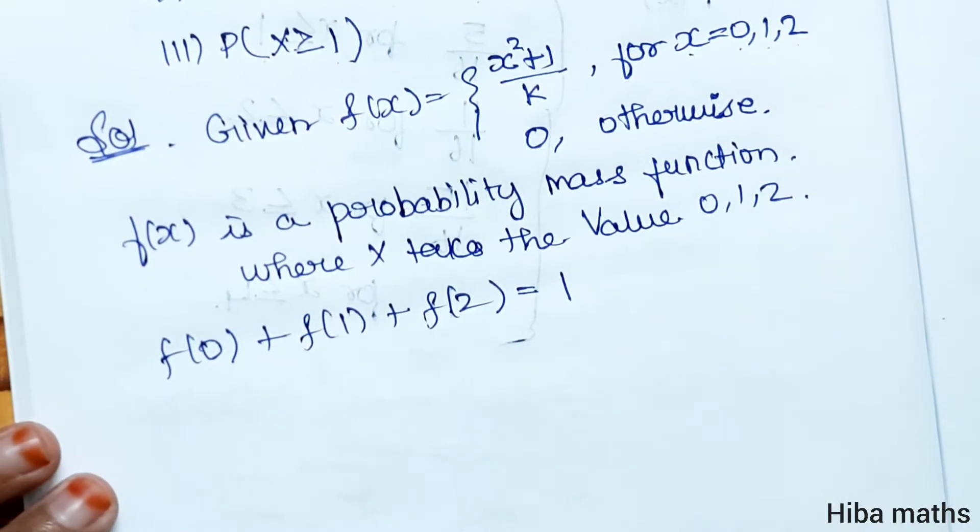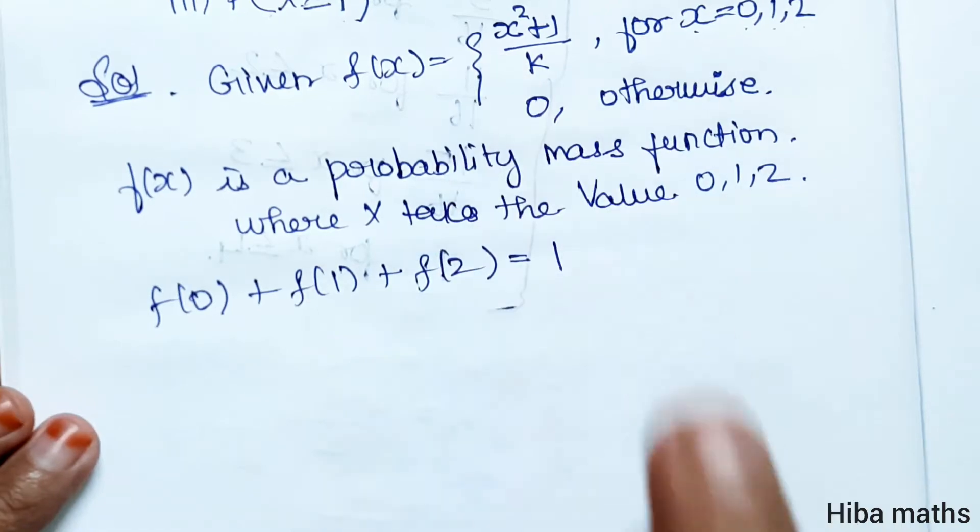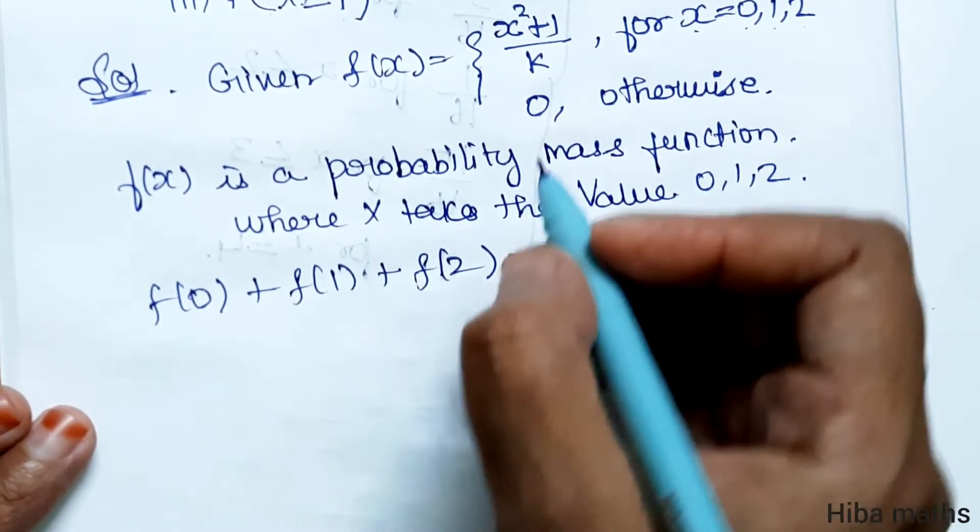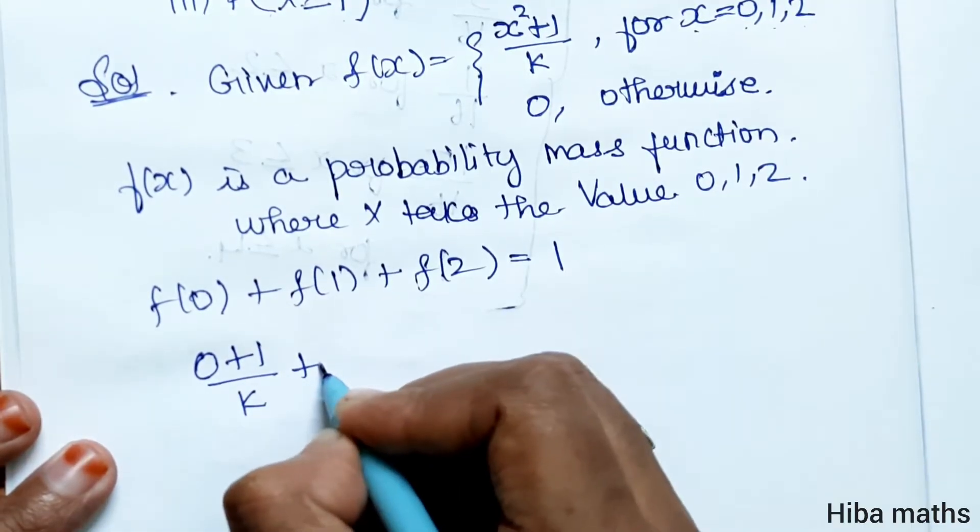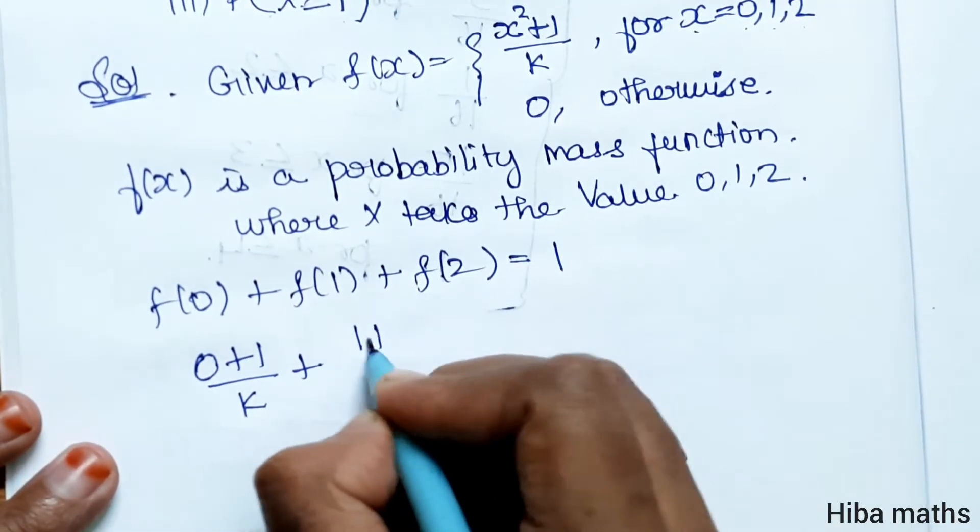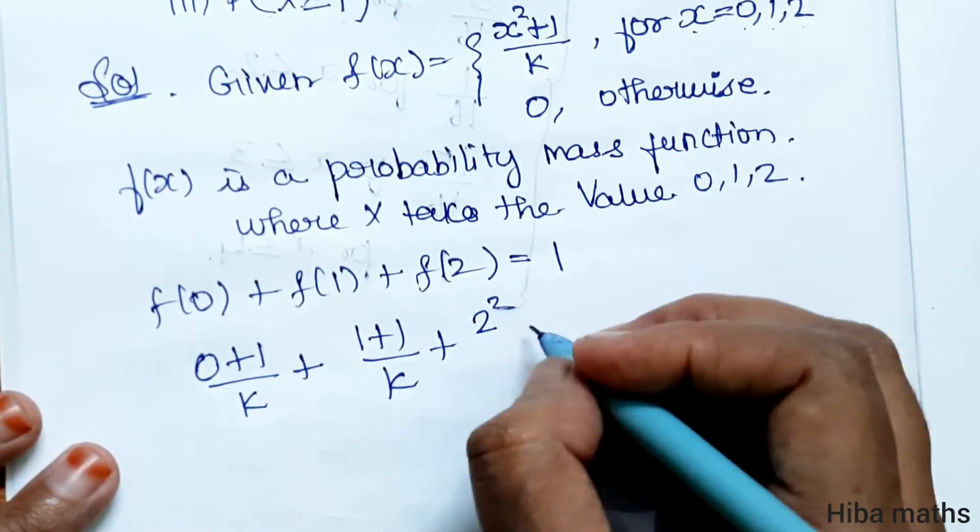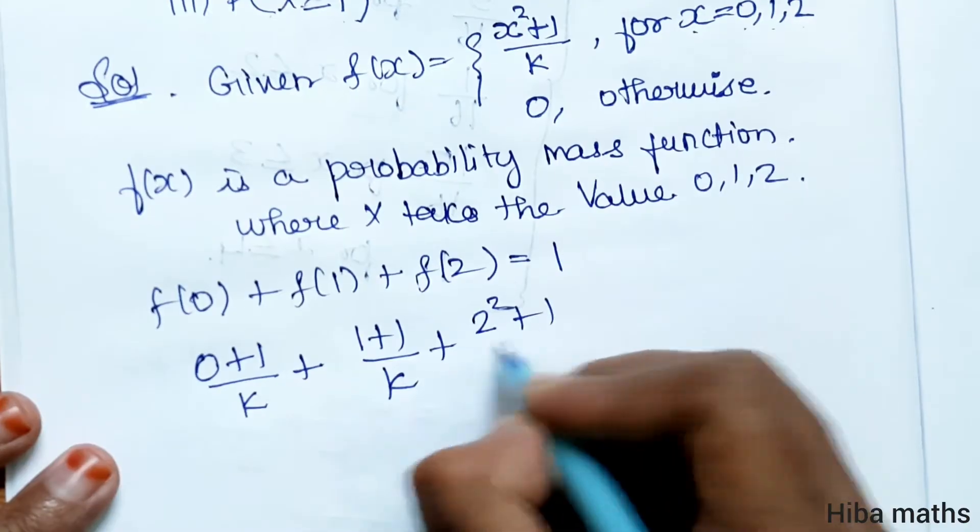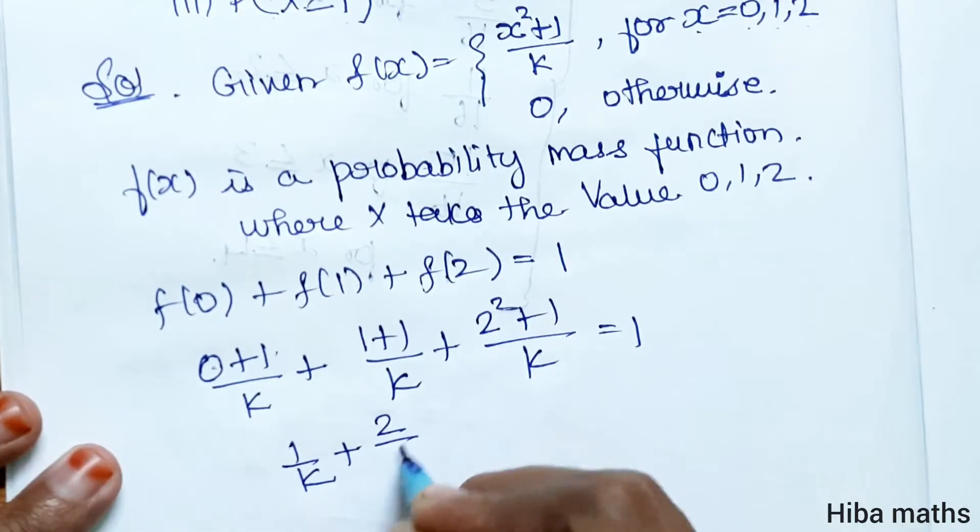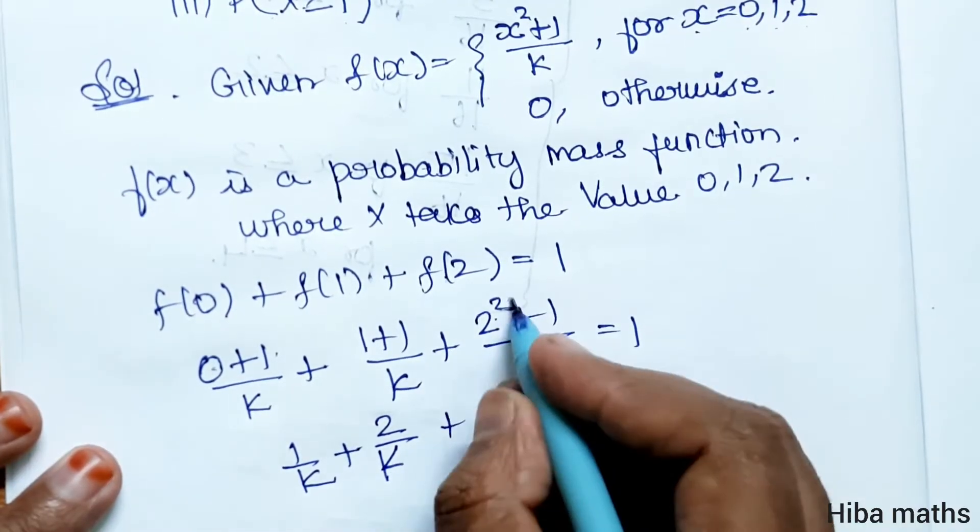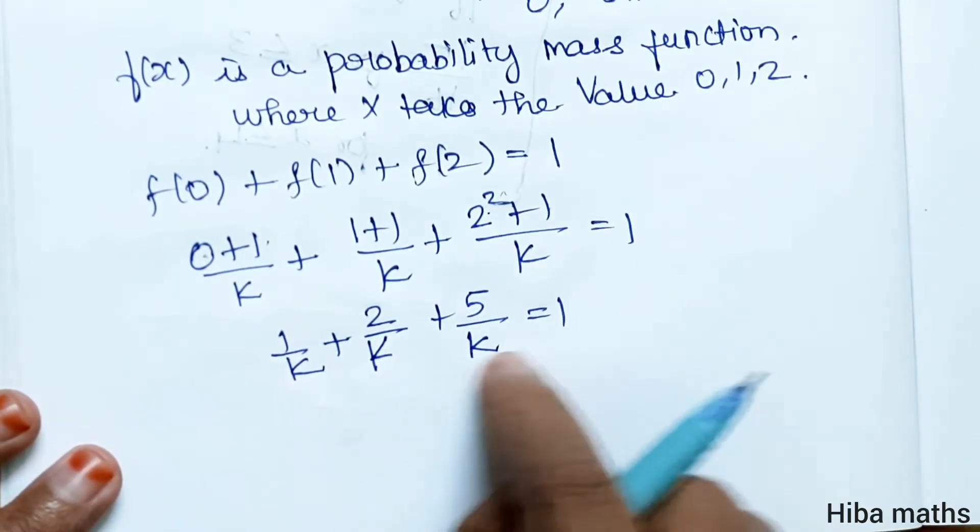f(0) equals (0² + 1)/k = 1/k. f(1) equals (1² + 1)/k = 2/k. f(2) equals (2² + 1)/k = (4 + 1)/k = 5/k. So 1/k + 2/k + 5/k equals 1, which gives us 8/k = 1, therefore k = 8.